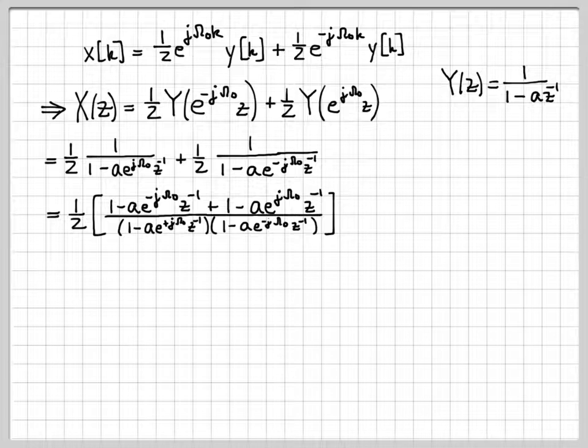You can see some interesting things happen. On the numerator, I have 1 + 1 = 2. I also have e^(-jω₀) and e^(jω₀). So if I do some factoring, I can get a cosine.